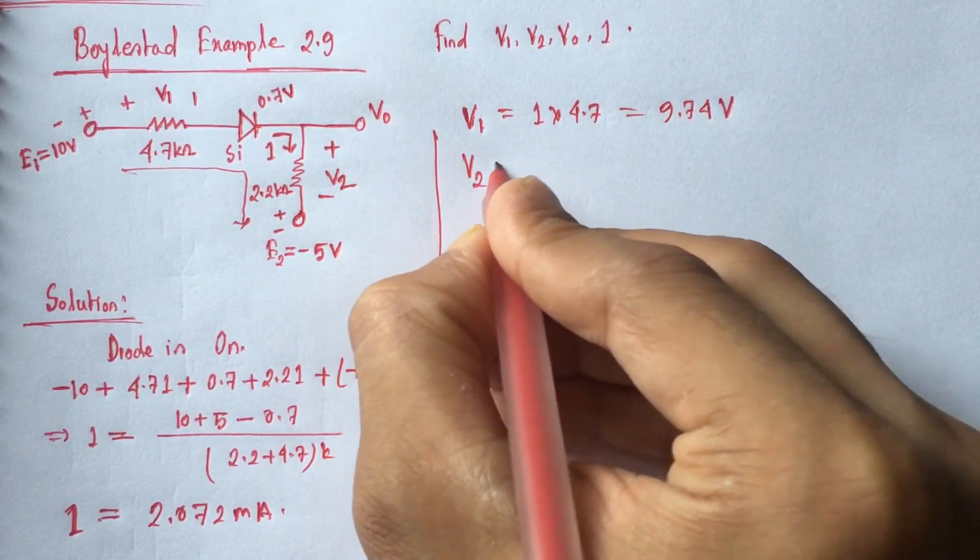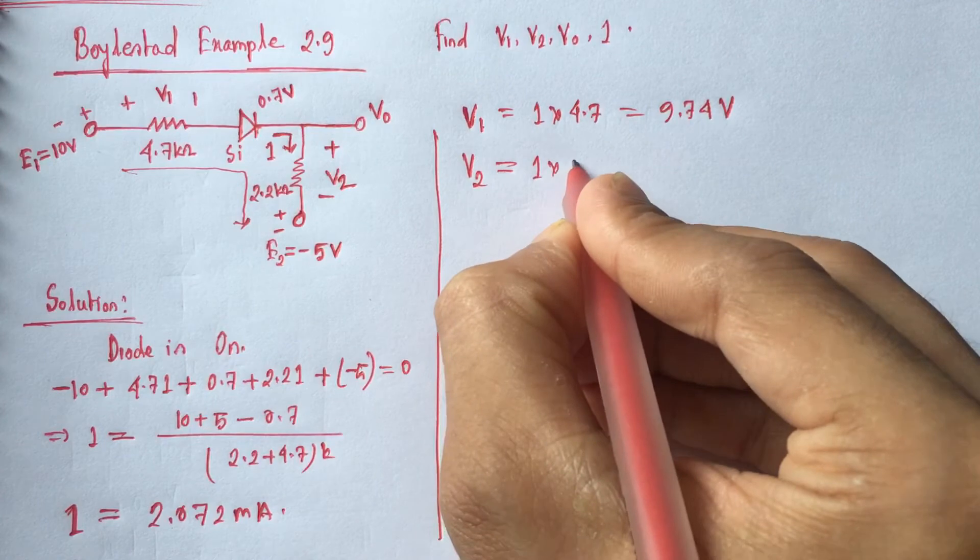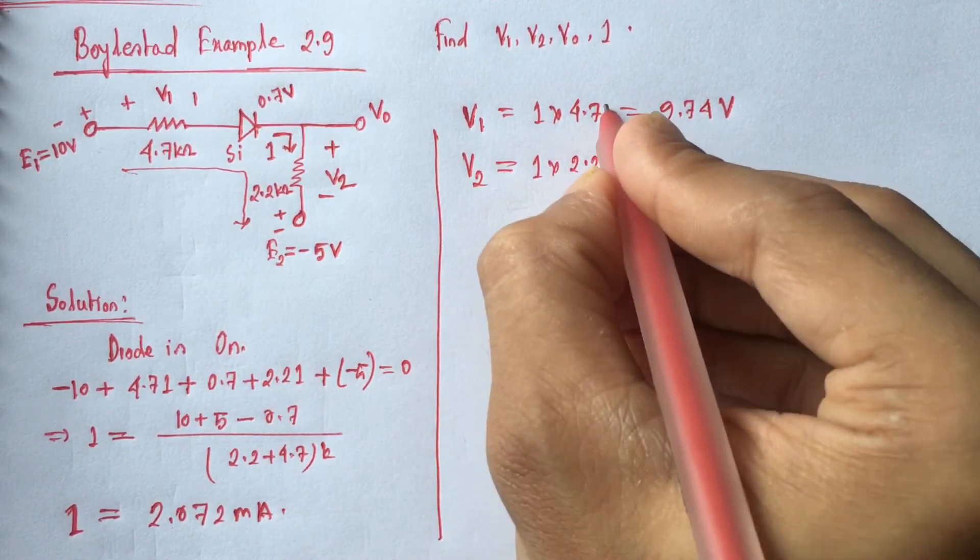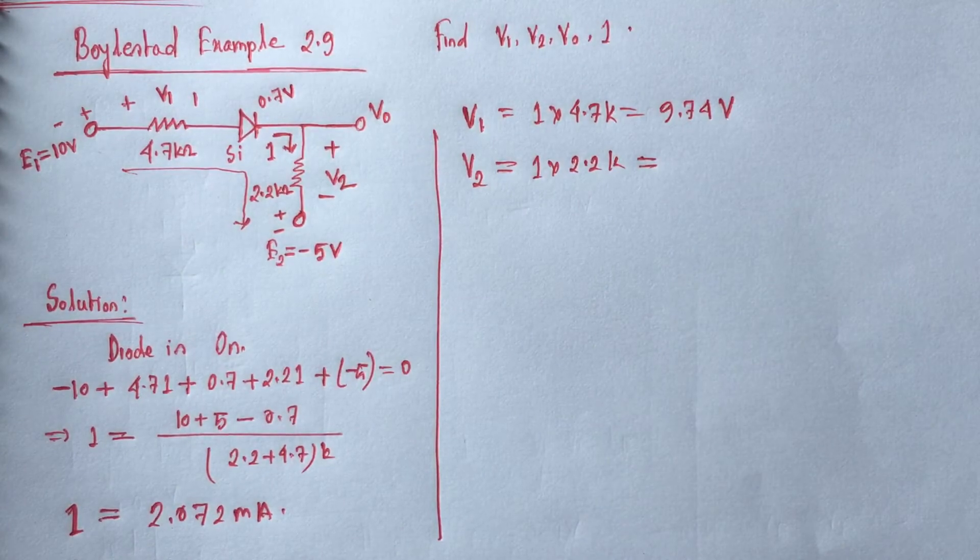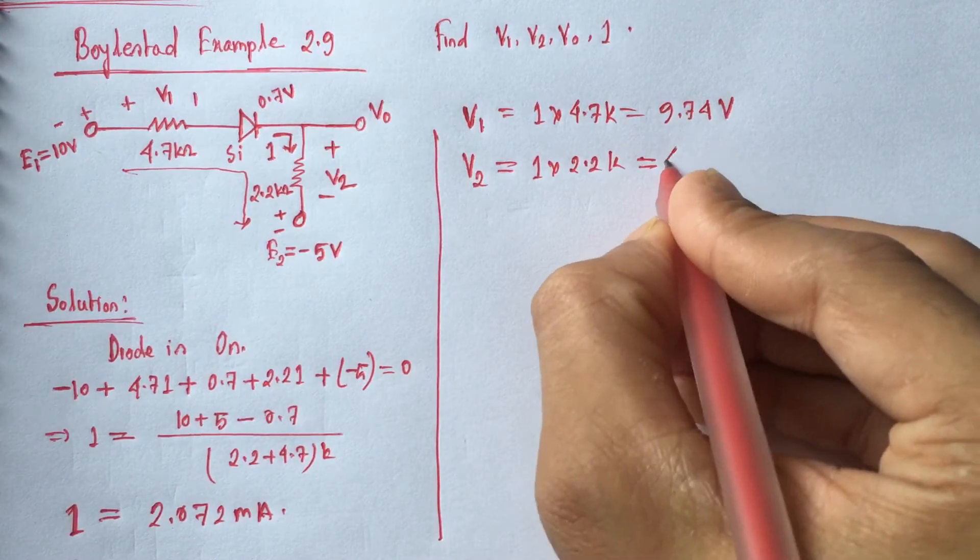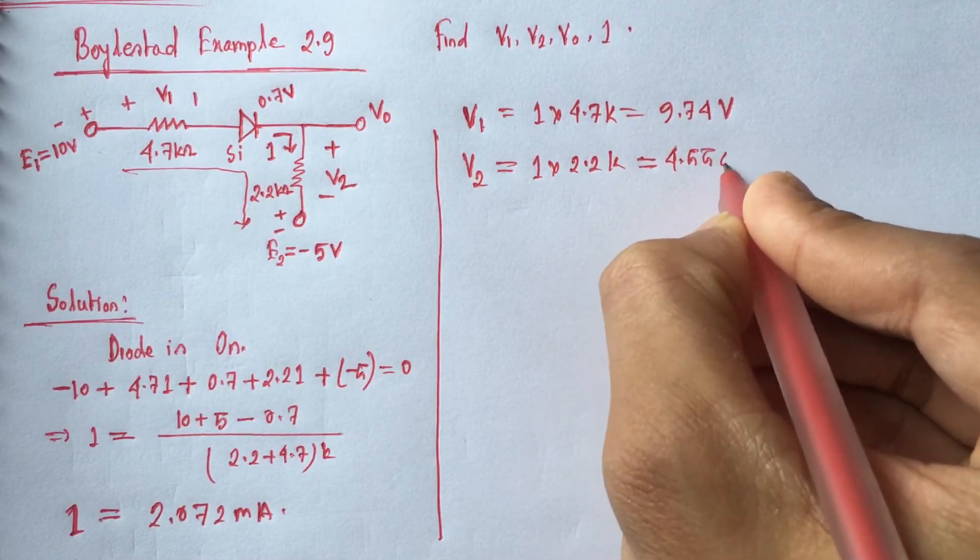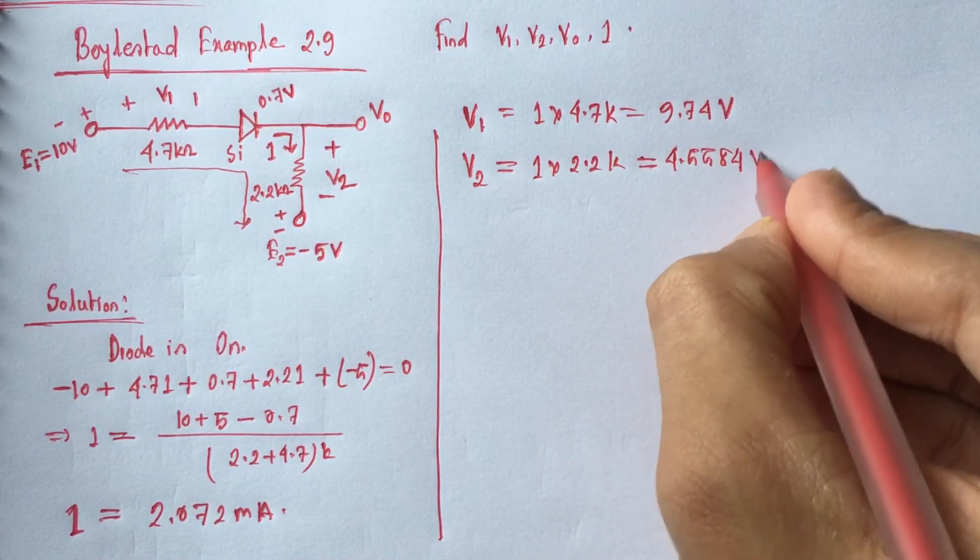V2 is equal I into 2.2 K. So V2 is equal to 4.5584 volt.